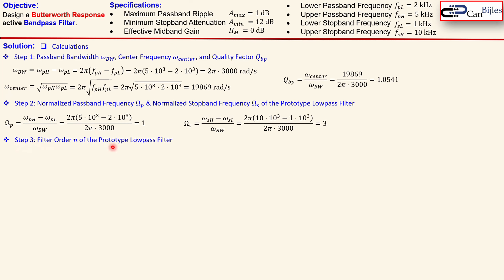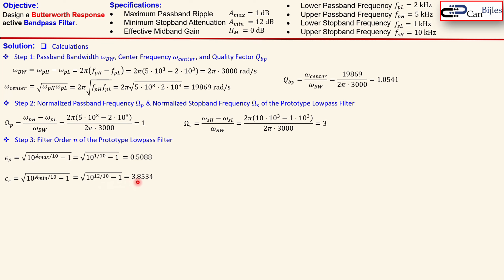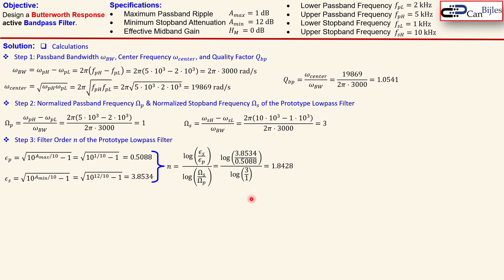Step three: we calculate the filter order n of our prototype lowpass filter. A_max and A_min are related to epsilon_p and epsilon_s. Epsilon_p calculated from 1 dB gives 0.5088; epsilon_s from the 12 dB minimum attenuation gives 3.8534. Putting these into the Butterworth filter order formula, with our normalized passband and stopband frequencies, gives 1.8428. Since we need an integer order, we use a second order prototype lowpass filter.